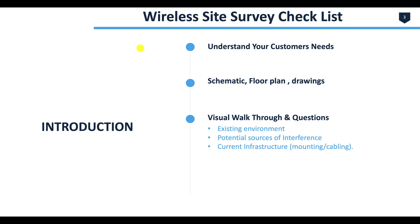I've been involved in conference calls between the manufacturer, the access point manufacturer, the handheld manufacturer, and the warehouse management ERP software maker — and they're all pointing fingers at each other. The AP manufacturer says it's the handheld firmware. The handheld vendor says not us. Then they look to us to fix it. So be prepared with everything: your checklist, your wireless site survey documentation, and everything you've documented for potential sources of interference.